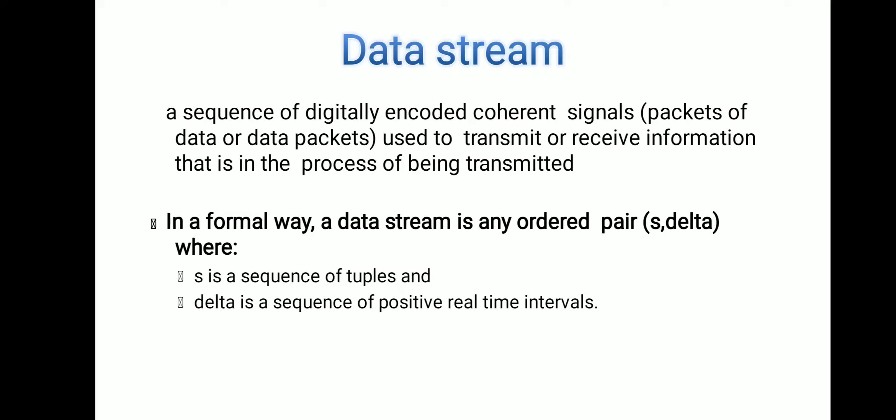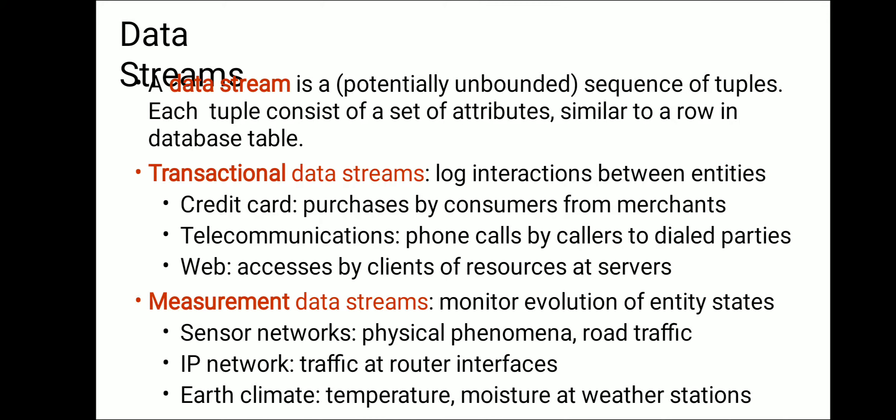In a specific interval, tuples come in at particular intervals — a continuous sequence of tuples — that is called data streaming. A stream is a potentially unbounded sequence of tuples. Each tuple consists of a set of attributes, similar to a row in a database table. There are two types: transaction data stream and measurement data stream.